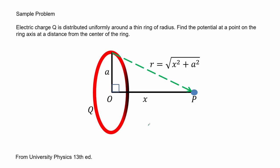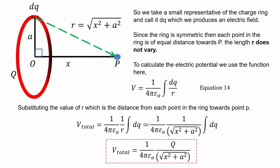Here we have a sample problem. Electric charge q is distributed uniformly around a thin ring of radius a. Find the potential at a point on the ring axis at a distance from the center of the ring. We take a small representative element dq which produces an electric field. Since the ring is symmetric, each point is of equal distance to P, meaning the length r does not vary as we evaluate the ring. Using equation 14 and substituting the known values, we find that the total electric potential at point P is the integral of dq, which equals the total charge q, multiplied by the appropriate constants.